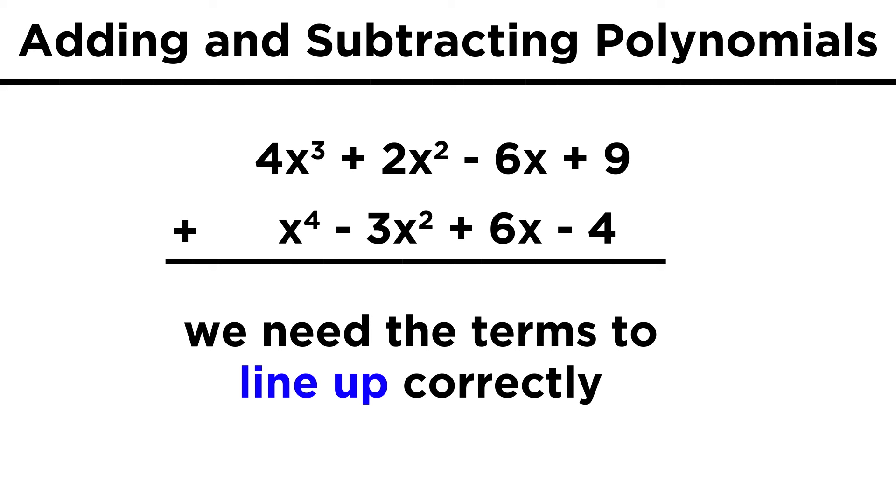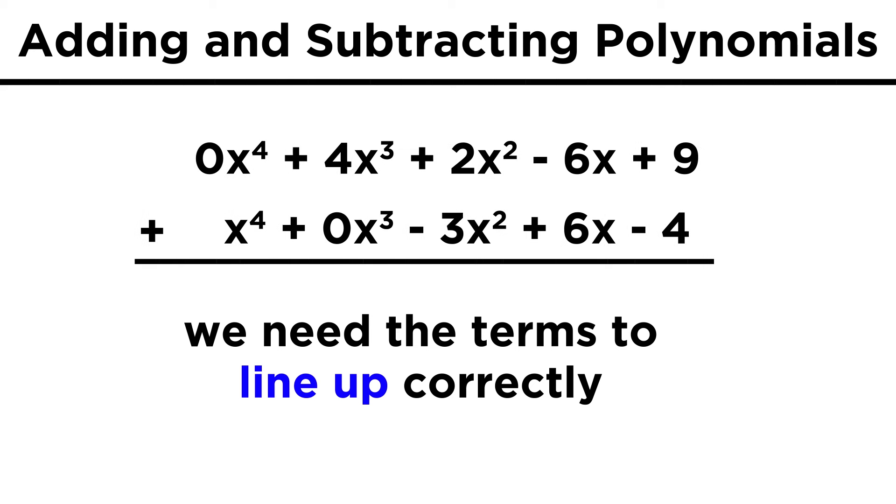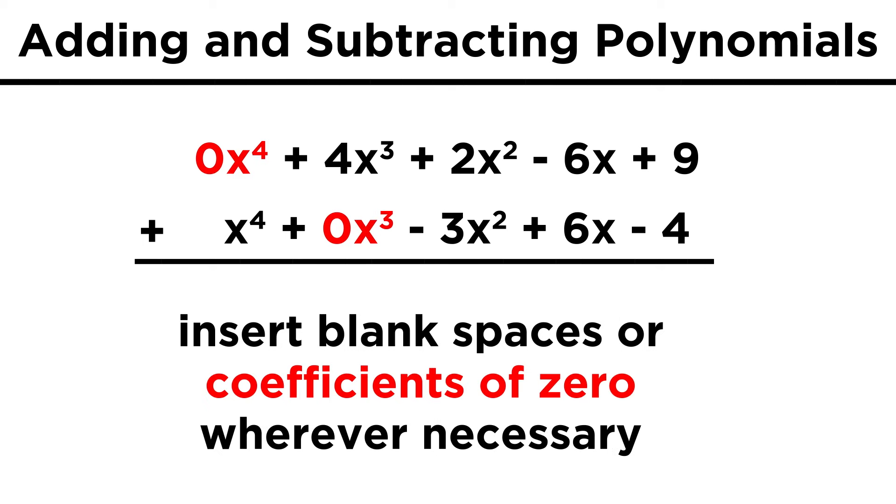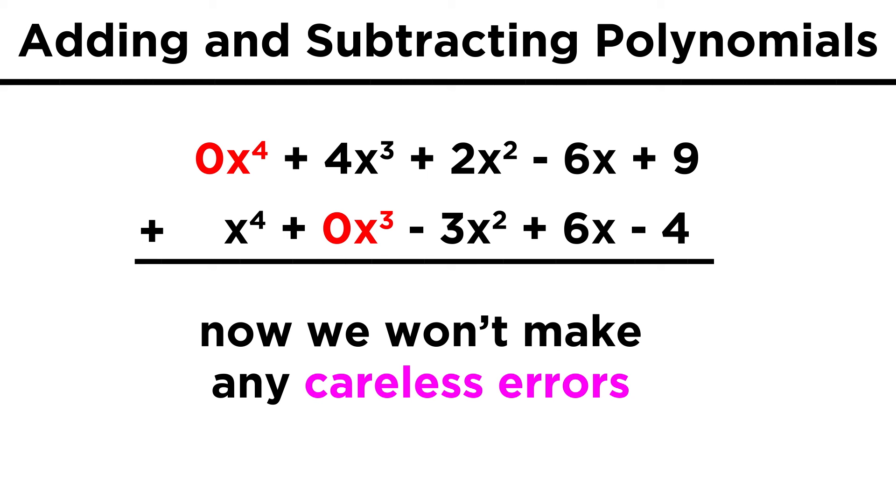If we do this, it is important to notice the degree on each term, and make sure the exponents are lined up properly, so that we add or subtract the correct terms. This could involve leaving a blank space if a particular exponent is not present in an expression, like this one, which does not have an x cubed term. This kind of bookkeeping will help us avoid making a careless error.